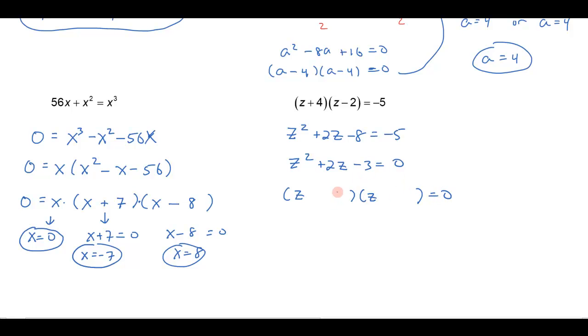z and z. And then the factors of 3, well, that has to be just 3 and 1. And I want to end up with a plus 2 in the middle. So I'm going to put a plus on the bigger factor, the 3, and minus on the 1. And then just double check: z squared minus 1z for the outers plus 3z for the inners makes 2z in the middle here, and then minus 3.